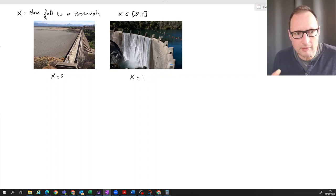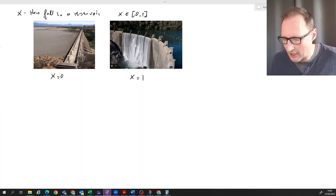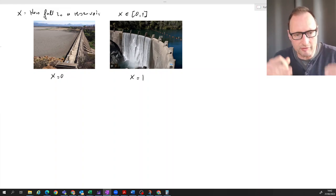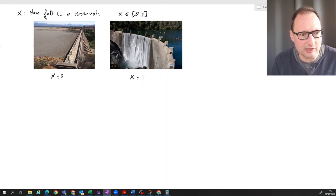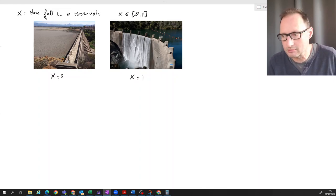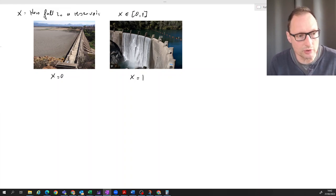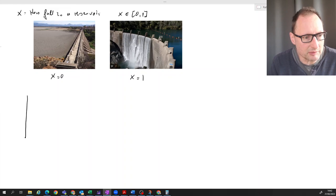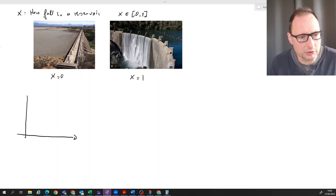Now if we want to calculate probabilities of how likely it is that the reservoir is at a certain level, then we need to know how that X is distributed. It's a random variable that depends on all sorts of things, mostly how much it rains and how much water people consume, of course. So let's say this random variable is described by the following two distributions.